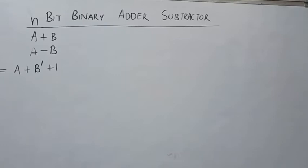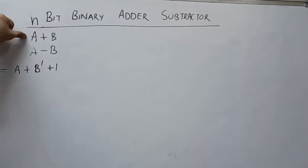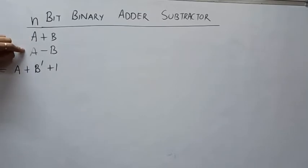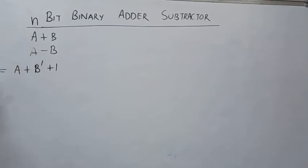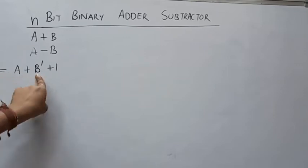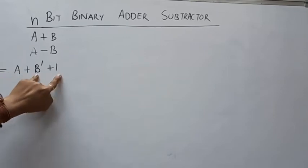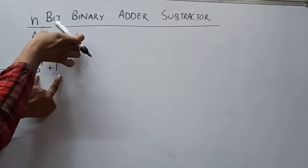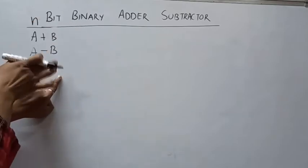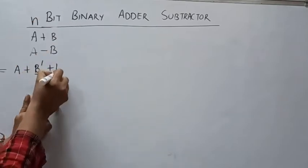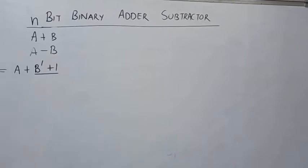If you are seeing these two phenomena — A plus B and A minus B — in both situations, the A value is the same; A is the N-bit number. The second variable is what changes. In the first case, B is as it is. In the second, it is B complement plus 1, meaning the 2's complement — so there should be a NOT gate.